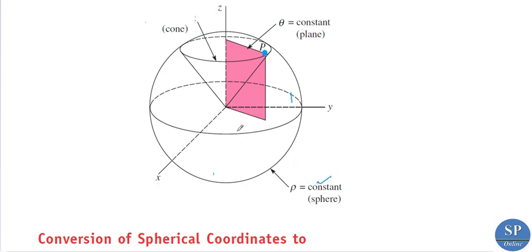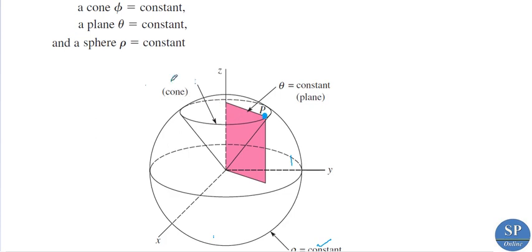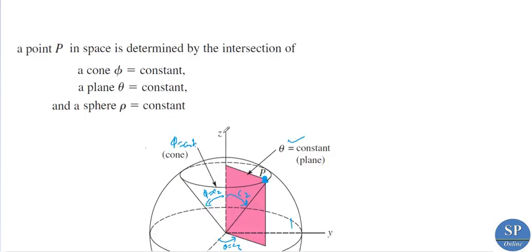This line represents φ equal to a constant c2 — that is, φ = c2. And this angle θ equals a constant c3 — this is the plane. So in spherical coordinates, any point P in 3D space can be determined by the intersection of a cone φ = constant, a plane θ = constant, and a sphere ρ = constant.